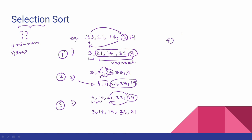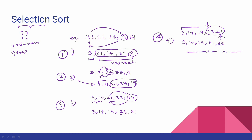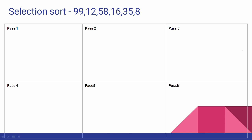Now the fourth iteration. The array is 3, 14, 19, 33, 21. We have already sorted the first three elements. The remaining elements are 33 and 21. The minimum is 21. We replace the fourth element 33 with 21. The result is: 3, 14, 19, 21, 33.